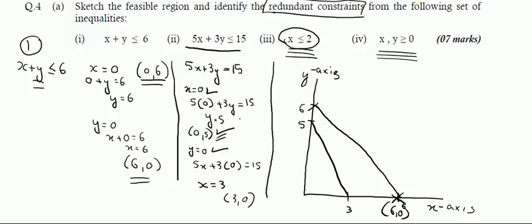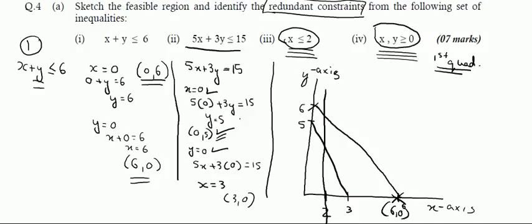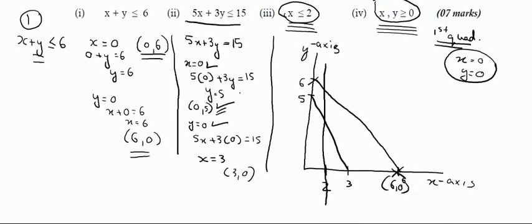Now the third line: x less than or equal to 2. The line x equals 2 is parallel to the y-axis and sits here. The non-negativity constraints define that the shaded region should be in the first quadrant. Remember, in the first quadrant both x and y values are positive. This was discussed in previous videos.